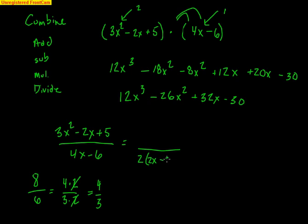You could always double check: 4x minus 6. On top, there's nothing common I could take out between 3, 2, and 5. I can't take out any x's. I could try to do my factoring technique here.